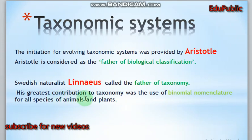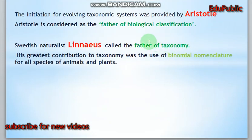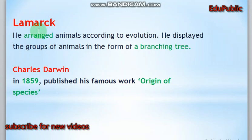Linnaeus was a Swedish naturalist and is called the father of taxonomy. His greatest contribution to taxonomy was the use of binomial nomenclature for all species of plants and animals. Lamarck arranged animals according to evolution and displayed groups of animals in the form of a branching tree.